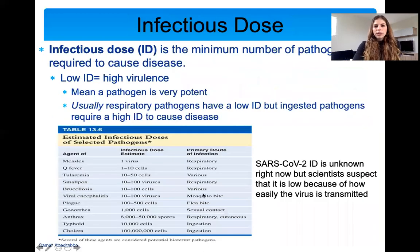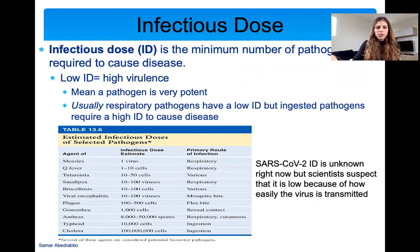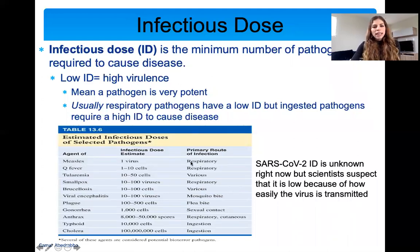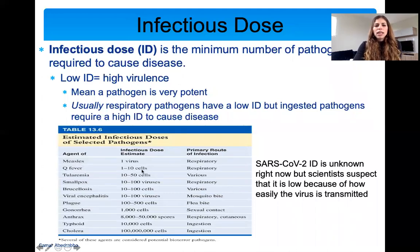Another term to know before we talk about respiratory diseases is infectious dose, or ID. Infectious dose is the smallest number of pathogens required to cause disease. Every disease has a different infectious dose. For example, measles — it takes one virus to give you measles. The lower an infectious dose is for a disease, the more virulent the disease is, meaning the pathogen is very potent and you only need a little bit of it.